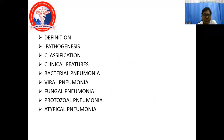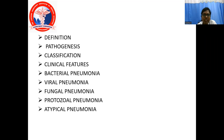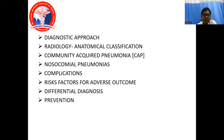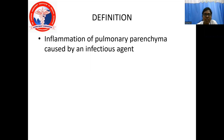Under pneumonia, we will discuss about definition, pathogenesis, classification, clinical features, bacterial pneumonia, viral pneumonia, fungal pneumonia, protozoal pneumonia and atypical pneumonia. And also the diagnostic approach, radiology, anatomical classification, community-acquired pneumonia, nosocomial pneumonia, complications, perspectives for adverse outcome, differential diagnosis and prevention. Pneumonia is defined as inflammation of pulmonary parenchyma caused by an infectious agent.